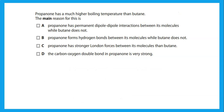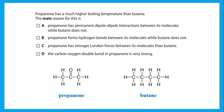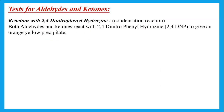Propanone has a much higher boiling temperature than butane. Since propanone is a ketone, the higher boiling temperature is due to the permanent dipole-dipole interactions between its molecules, while butane only has the weak van der Waals forces.